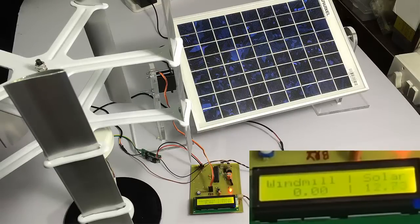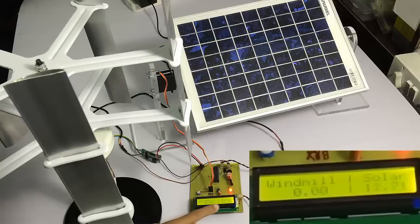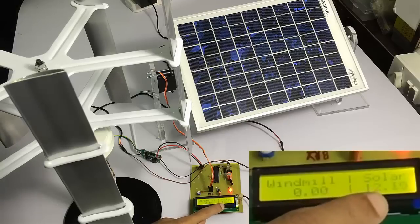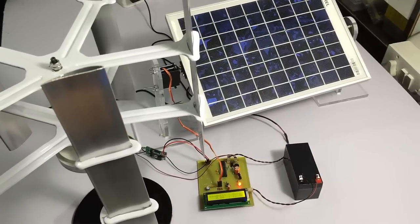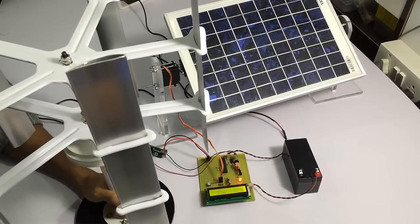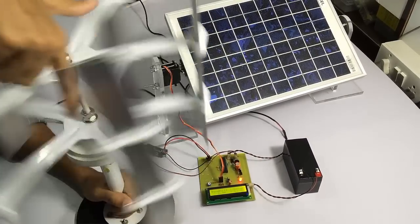We also have a windmill here. As you can see, the solar voltage is displayed on this side and the windmill voltage is displayed on this side. Now let's rotate the windmill to check its voltage.